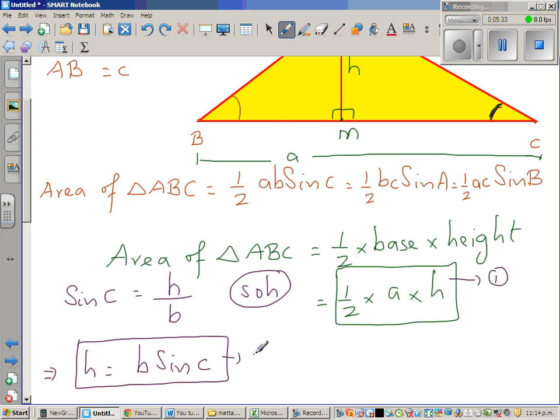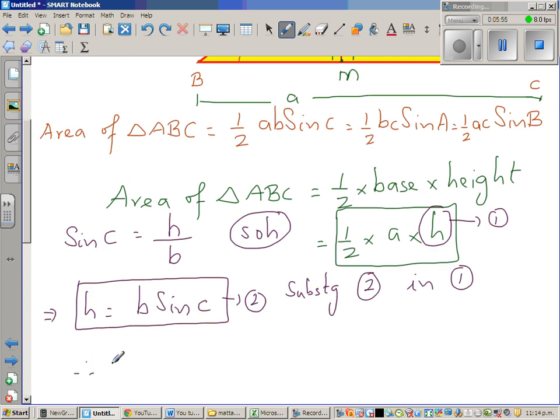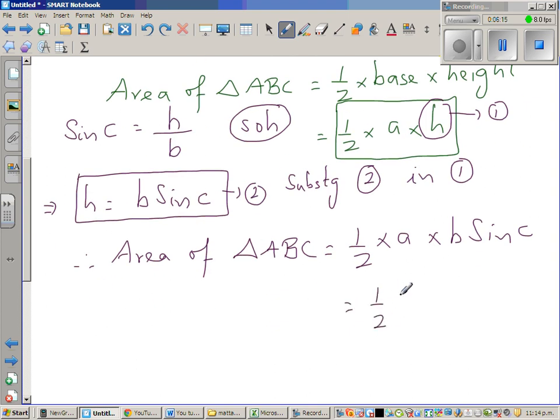So say this is result 1, and this is result 2. So in place of height h, what can I put? I can put b sine C. So substituting 2 in 1, in place of h, I can replace by b sine C. Therefore, area of triangle ABC is half times a times h is b sine C. And so we have got the formula, area of triangle is half ab sine C.